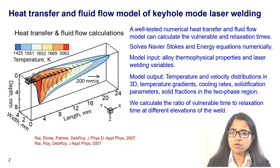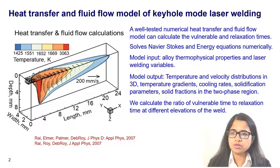The red region corresponds to the keyhole, which is at the boiling point temperature of the alloy. The temperatures of 1652 Kelvin, 1551 Kelvin, and 1425 Kelvin correspond to the solid fractions of 0.4, 0.9, and 0.99 respectively. Using these temperature fields, we calculate the ratio of vulnerable to relaxation time at different elevations of the weld.